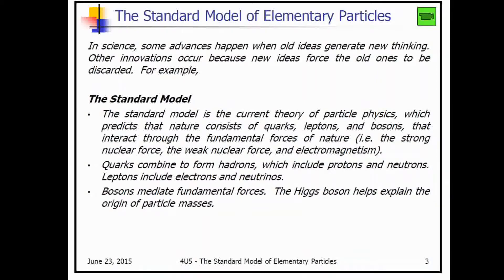Now we get to the standard model. The standard model is the current theory of particle physics. It predicts the nature of physics and talks about how each of these particles consists of other particles. In particle physics, the smallest particles are bosons, quarks, and leptons — or more broadly, bosons and fermions, since quarks and leptons are fermions. Bosons mediate fundamental forces, while fermions combine to create larger particles of matter called hadrons, or exist as leptons like electrons and neutrinos.